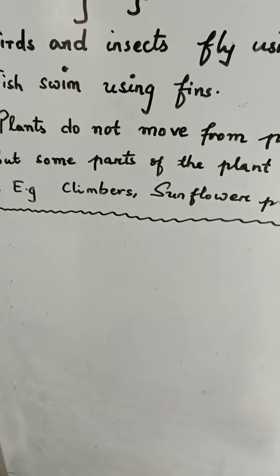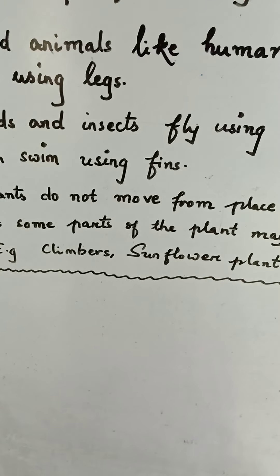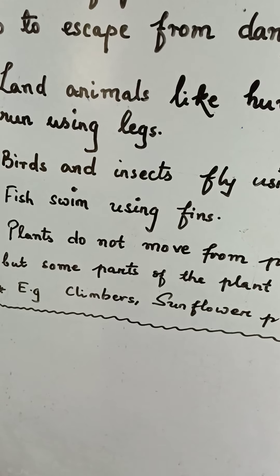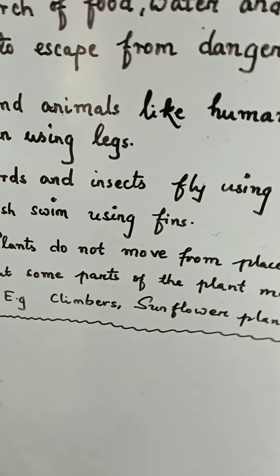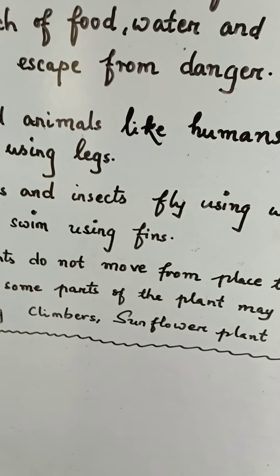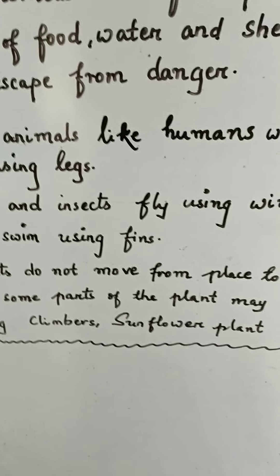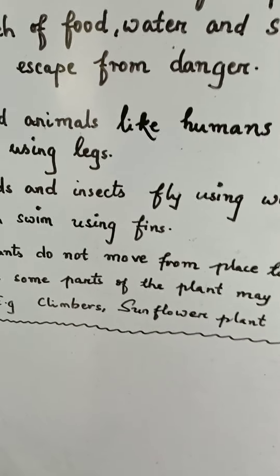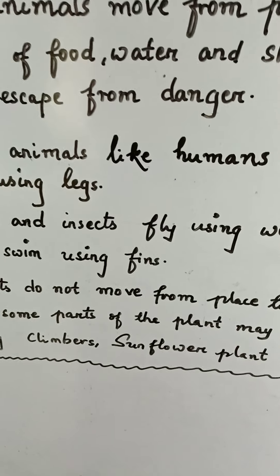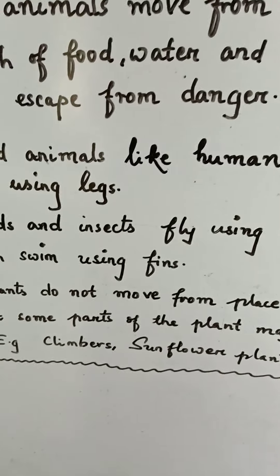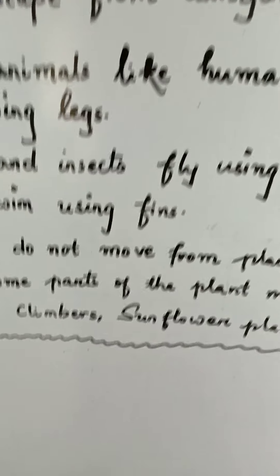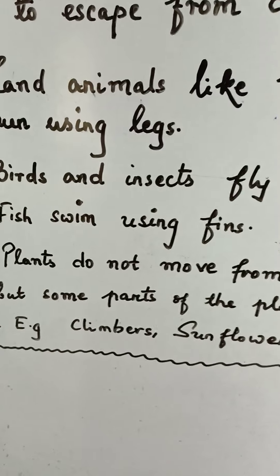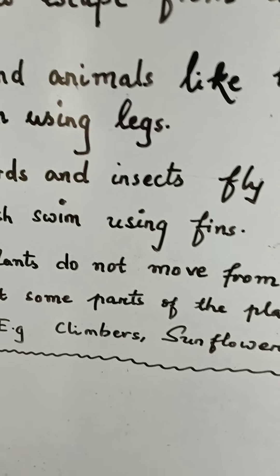We can see this in case of climbers. A climber, for example, is the money plant. When you plant a money plant, the stem will climb along a support. If it gets a support, it will try to climb. So the stem of the plant is slowly moving — that is how some parts of plants move.